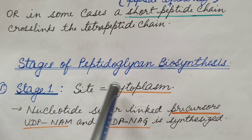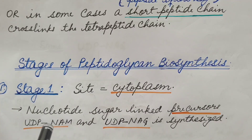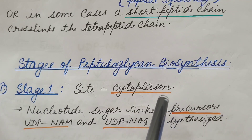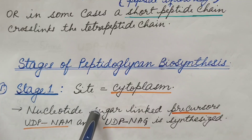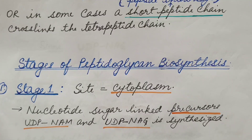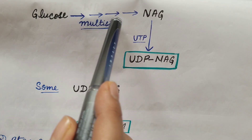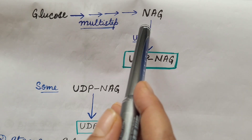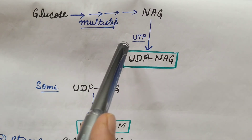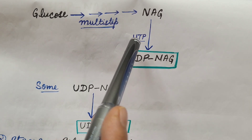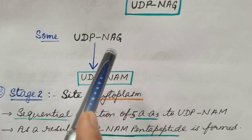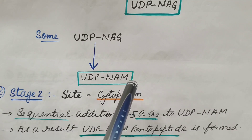For convenience, peptidoglycan biosynthesis is divided into four stages. Stage one occurs in the cytoplasm of the bacterial cell. In this stage, nucleotide sugar-linked precursors UDP-NAM and UDP-NAG are synthesized. Glucose is converted through multi-step reactions into N-acetyl glucosamine, then UTP binds — serving as the energy source — and one inorganic phosphate is used, yielding UDP-NAG.